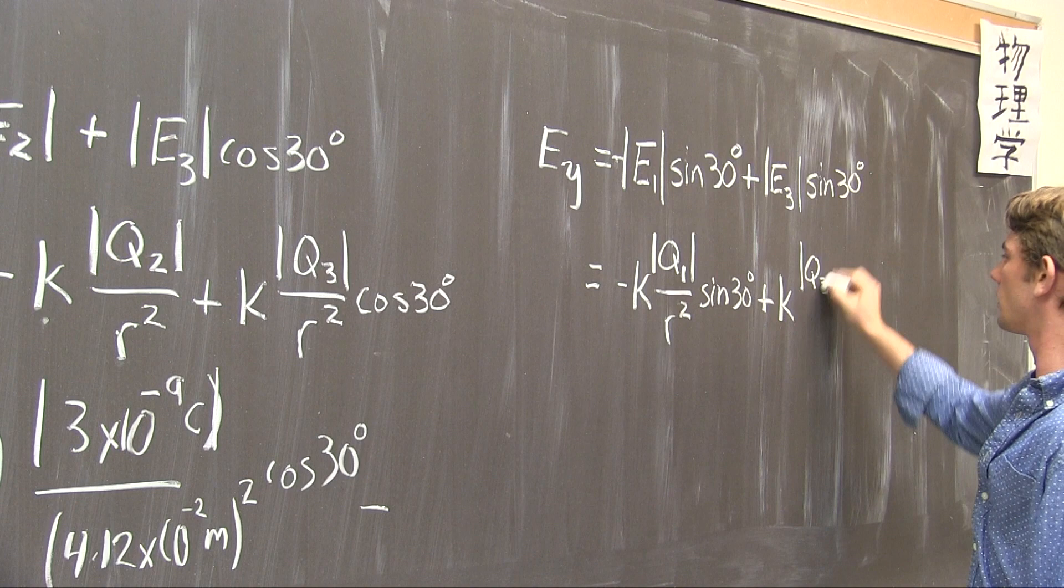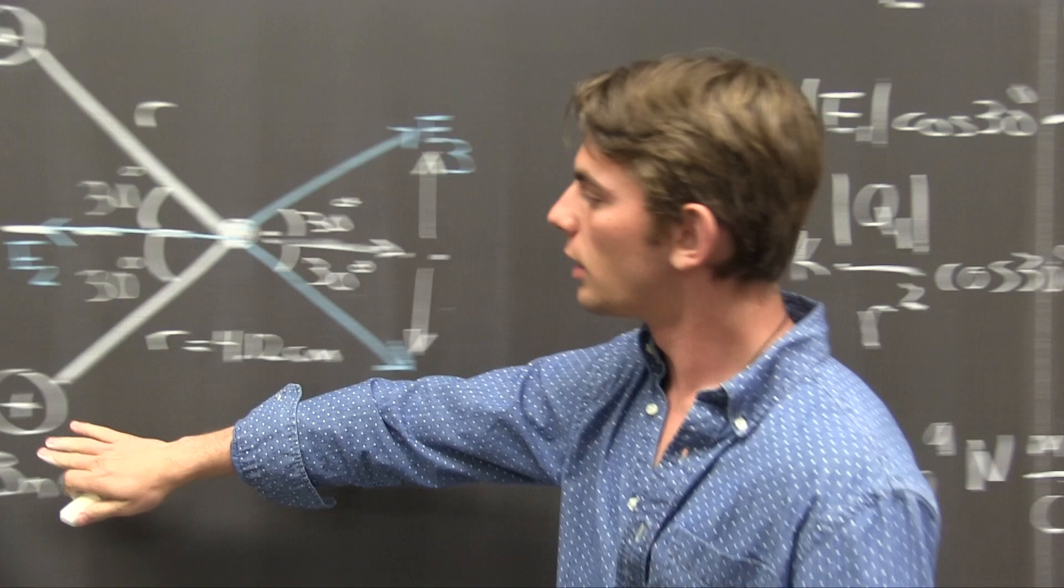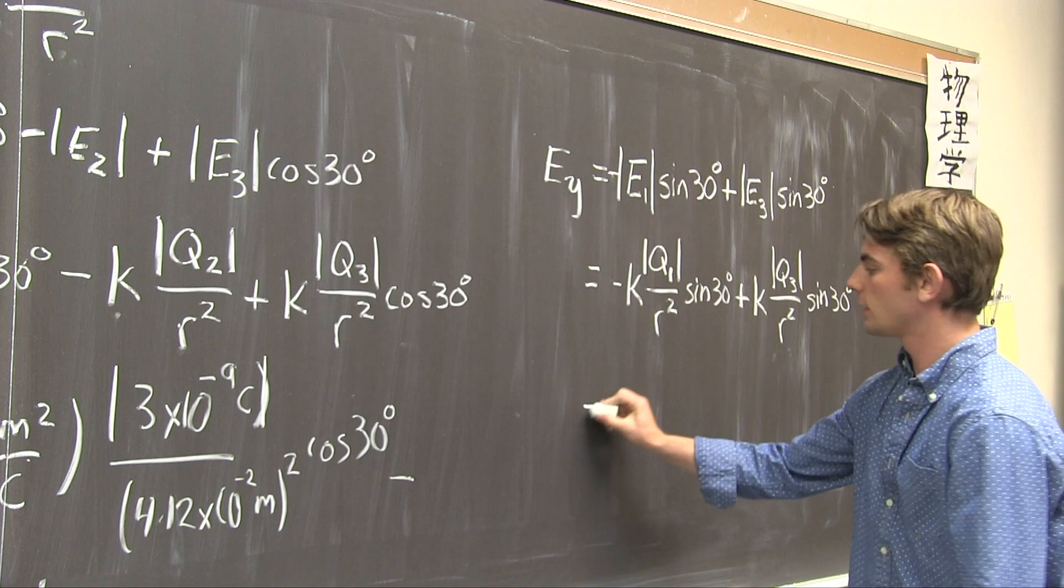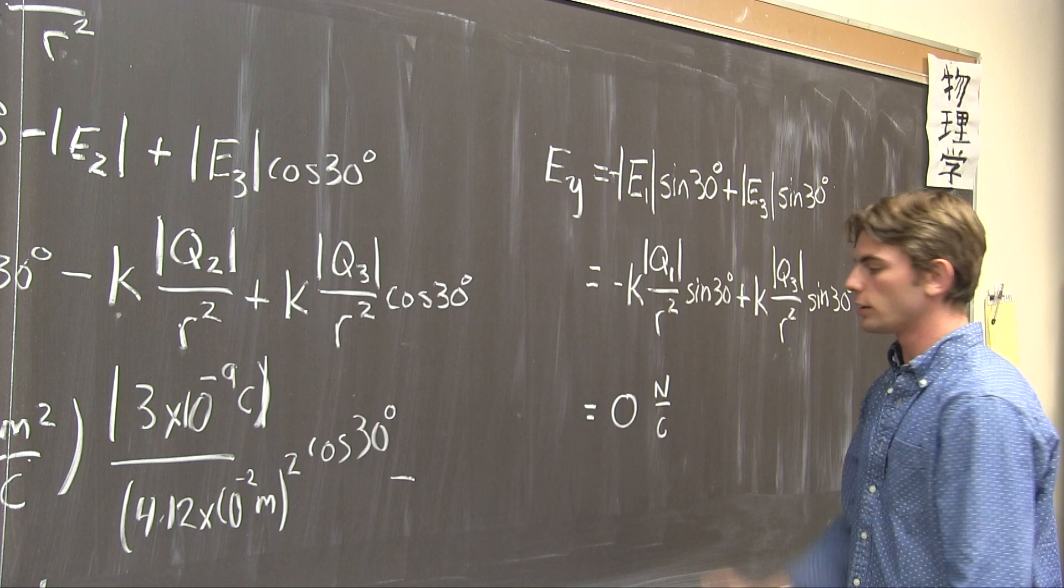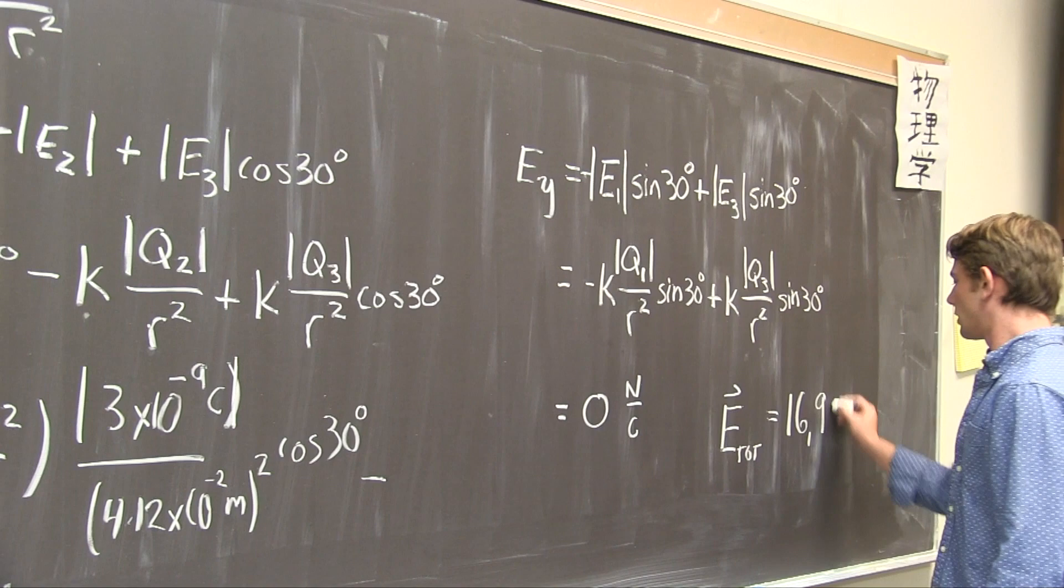And then we get fairly lucky because if we look at the charges, Q3 and Q1, they're exactly the same, meaning that these two values here cancel out without us having to plug in any number. This is equal to 0 Newtons per coulomb in the y direction. So that lets us know that the total electric field is just the x component, 16,900 Newtons per coulomb in the i hat direction.